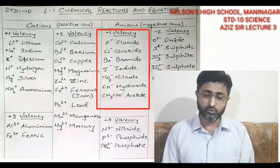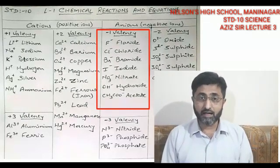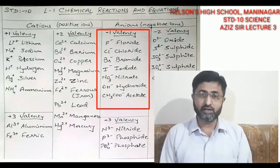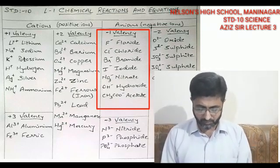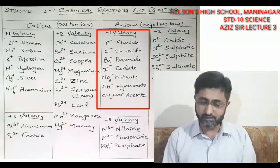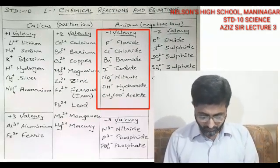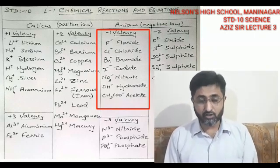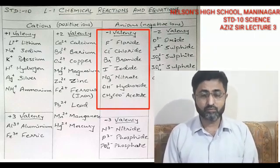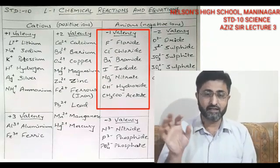Minus one anions: F− is fluoride, Cl− is chloride, Br− is bromide, and I− is iodide. These are the halide anions with minus one valency.